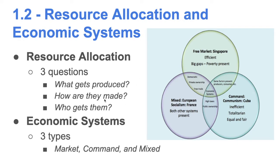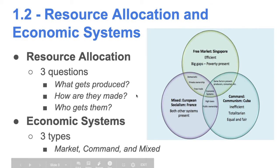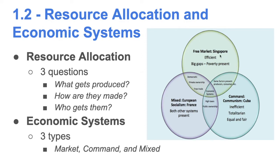There are different ways to answer these questions. The government might say we're just going to take care of all of that — that would be a command system. Whereas another government might say we're going to let all the people determine that on their own, not tell them what to make and what to consume — that would be the market system. In reality, most systems are pretty mixed, as you can see in this Venn diagram.